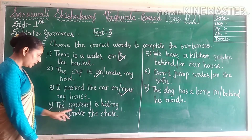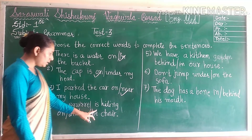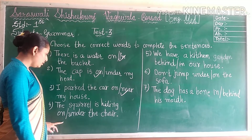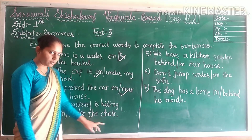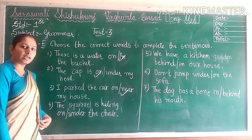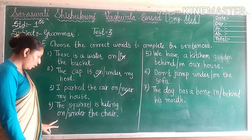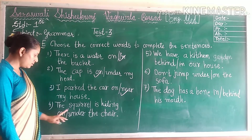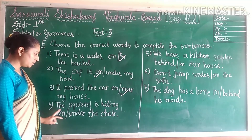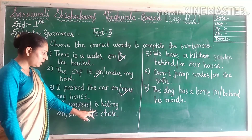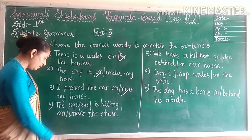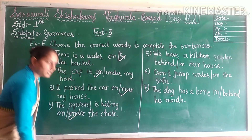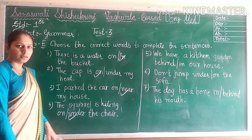Fourth number. The thief is hiding — blank — the chair. Options: ON or UNDER. Under. So our answer is: the thief is hiding under the chair.